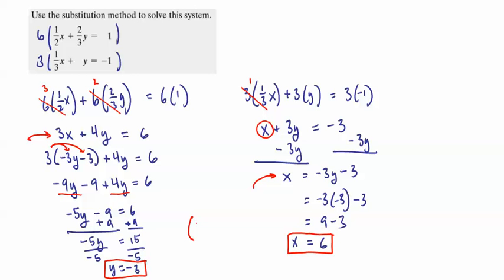And so, our final solution, remember, we write the x first. 6 comma negative 3. And that's how we solve a system of equations using the substitution method. And first, by getting rid of all the fractions using least common denominators. So, that's going to do it for this video. Thank you.